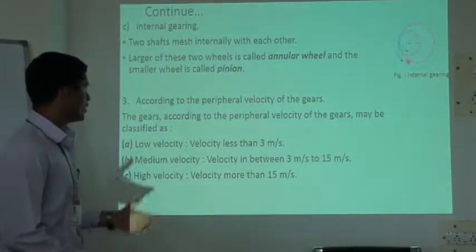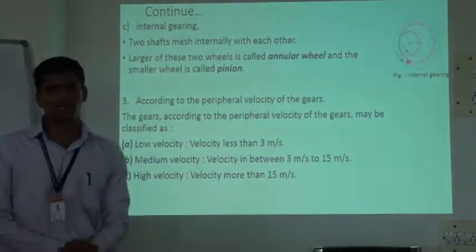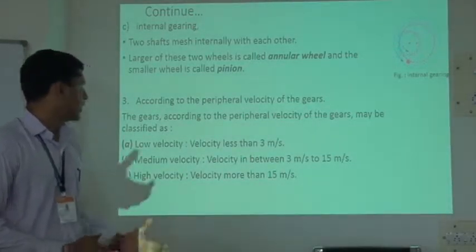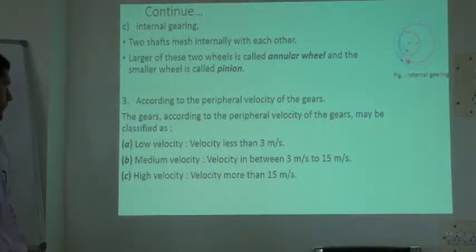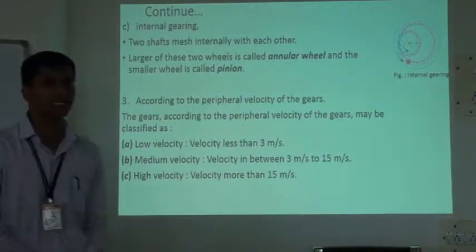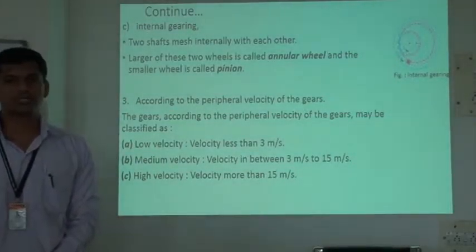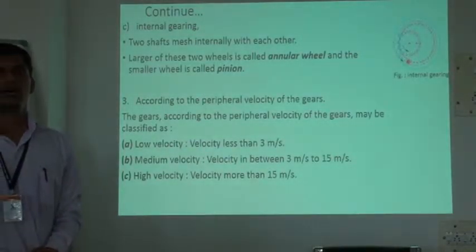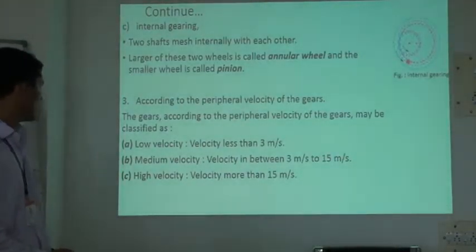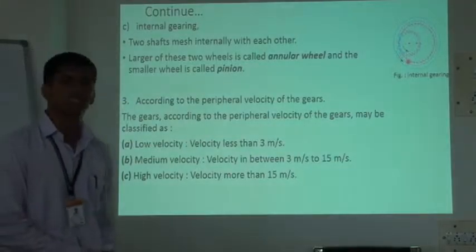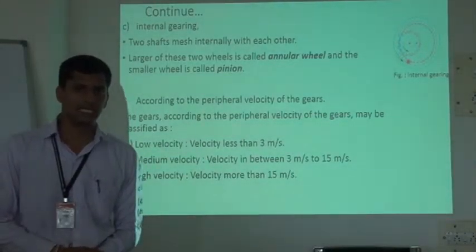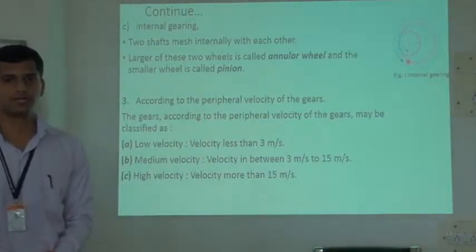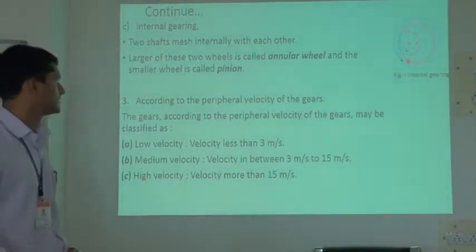Gears are also classified according to peripheral velocity. Low velocity is less than 3 m/s — used in precision washers and small machines. Medium velocity is between 3 to 15 m/s. High velocity is more than 15 m/s.